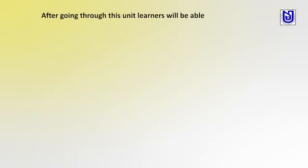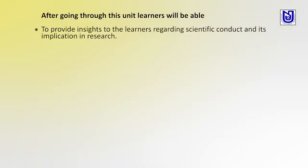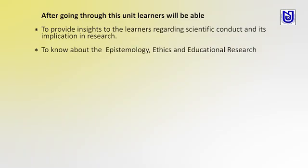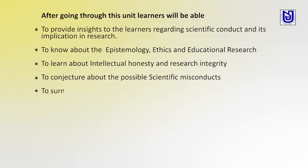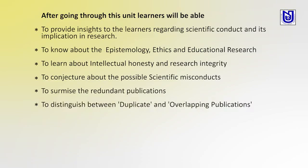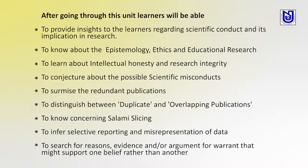After going through these lessons, learners will be provided insights regarding scientific conduct and the implications of research, to know about the epistemology of ethics and educational research, to learn about intellectual honesty and research integrity, to conjecture about possible scientific misconduct, to summarize redundant publications, to distinguish between duplicate and overlapping publications, and to know about overcoming salami slicing. All these things every person has to know.